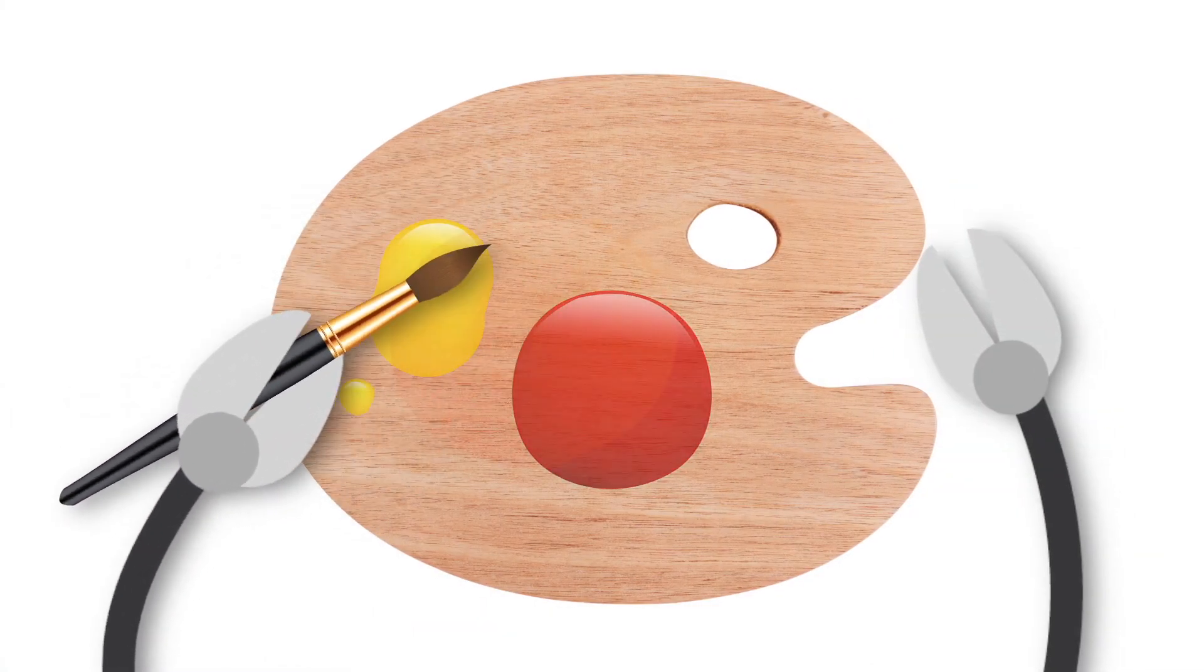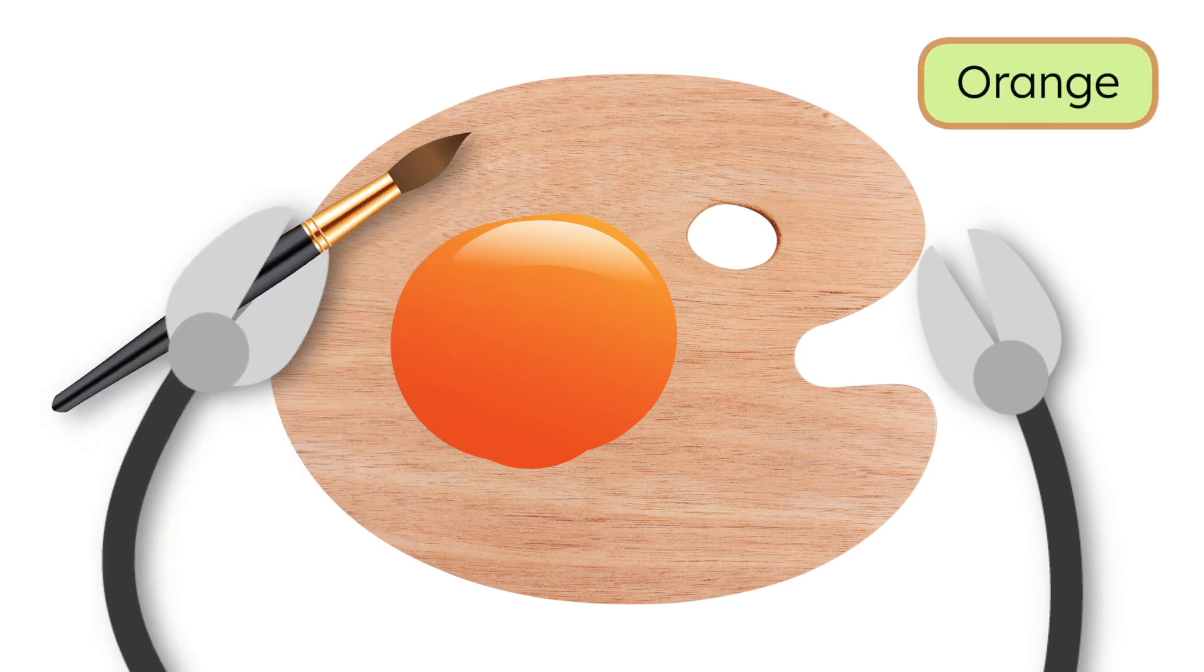Look! Do you see how the red and yellow are coming together to create orange? Wow! Now we can use this color for a sunset or a bright flower. Let's see what other colors we can make.